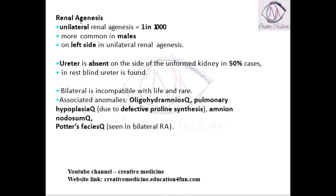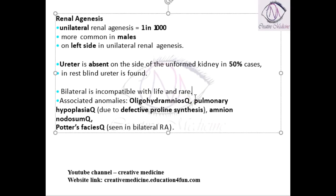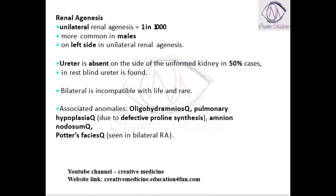If renal agenesis is unilateral then it is manageable, but if there is bilateral renal agenesis, the child is incompatible with life. Kidneys are very important for the excretion of metabolic byproducts, and bilateral renal agenesis hampers this excretion. It is fortunate that bilateral renal agenesis is very rare.